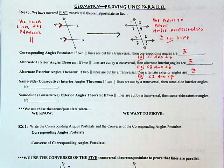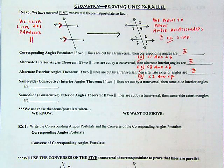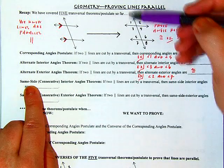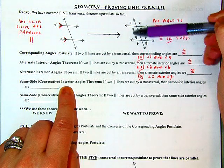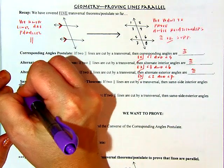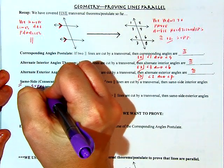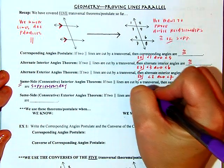If our lines are parallel, any corresponding, alternate interior, or alternate exterior angles have to be congruent — identical angles whose measures would be equal. Then we have our same side or consecutive interior angles. Same side just means same side of the transversal, and interior means inside of the parallels. So three and five would be same side interior, so would four and six, and the relationship is that they are supplementary — same side means supplementary, their measures add to 180. An example would be three and five.